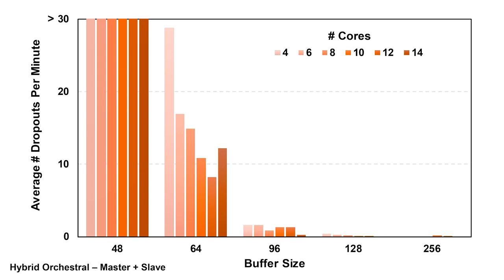At the 96 buffer size the number of dropouts did drop down to a manageable level — still a little difficult, but in a pinch you could make it work. At the 128 and 256 buffer sizes there were absolutely no issues, even all the way down to 4 cores. Once you got up to a buffer size of 128 or 256, whether you were running 4 cores or 14 cores didn't make any difference — the project ran just fine regardless of core count.